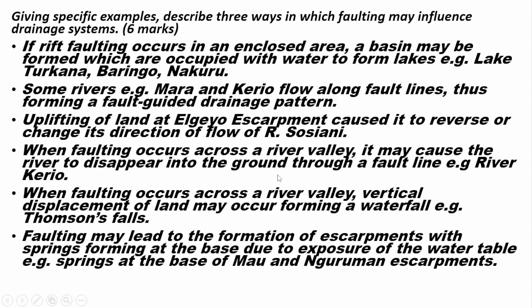Giving specific examples, describe three ways in which faulting may influence drainage systems. If rift faulting occurs in an enclosed area, a basin may be formed which is occupied with water to form lakes — for example, Lake Turkana, Baringo, and Nakuru. Some rivers, such as River Mara and River Kerio, flow along fault lines, forming fault-guided drainage patterns. The uplifting of land at Elgeyo escarpment caused rivers to reverse or change direction, including River Sosiani.